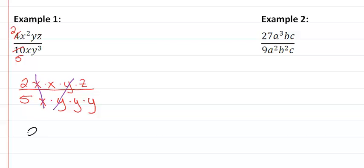So we have 2, we have 1x, we have 1z. In the denominator, I have a 5, I have a y squared.